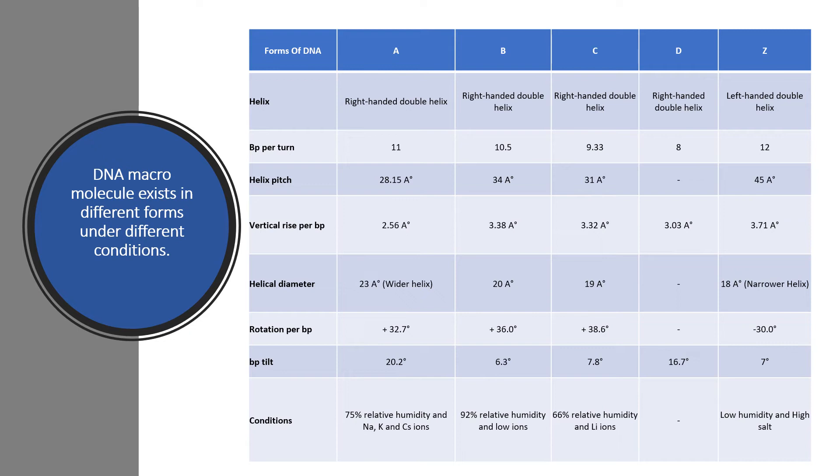Rotation per base pair in A DNA is 32.7 degrees. For B DNA it is 36 degrees, 38.6 degrees in C DNA, and negative 30 degrees for Z DNA.